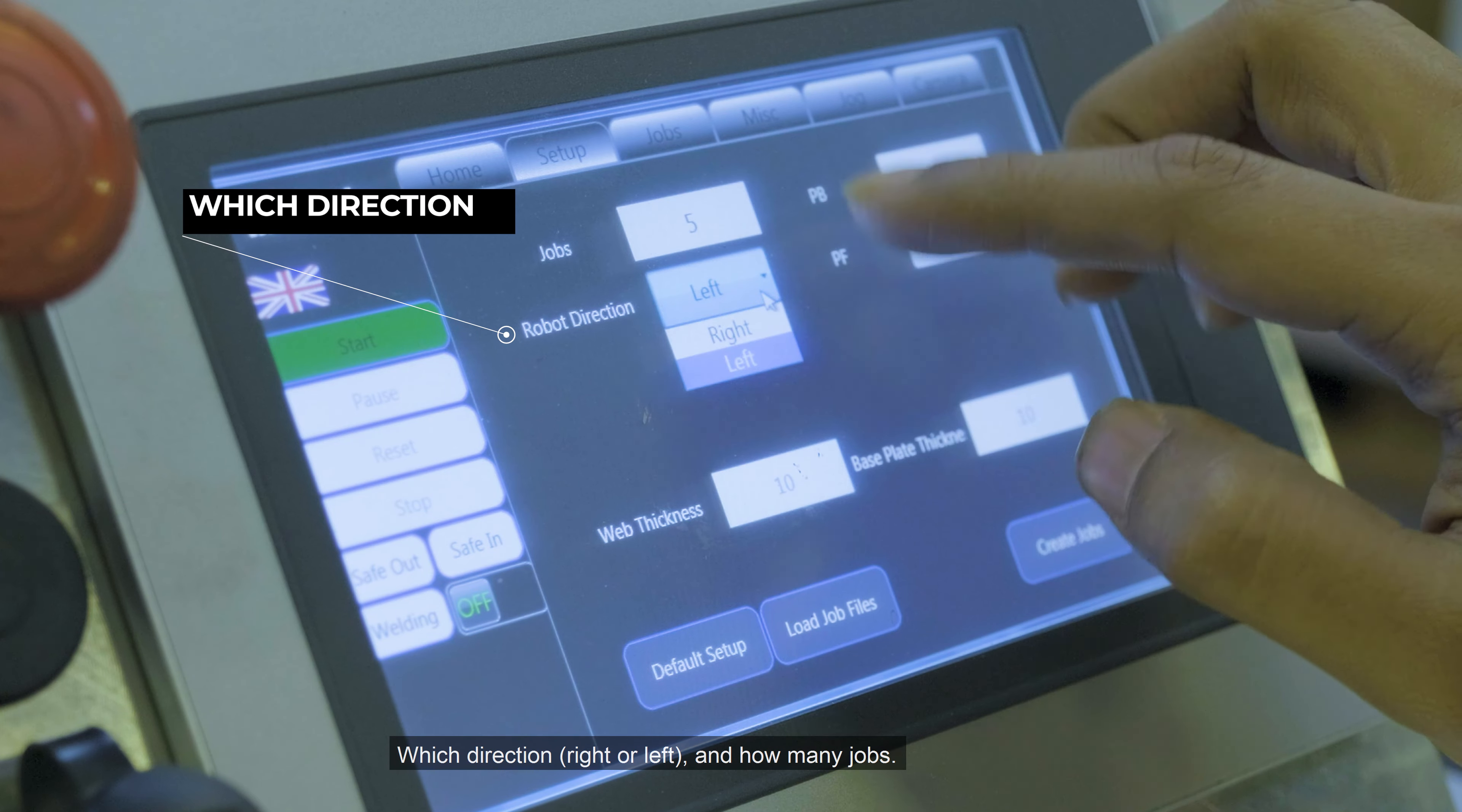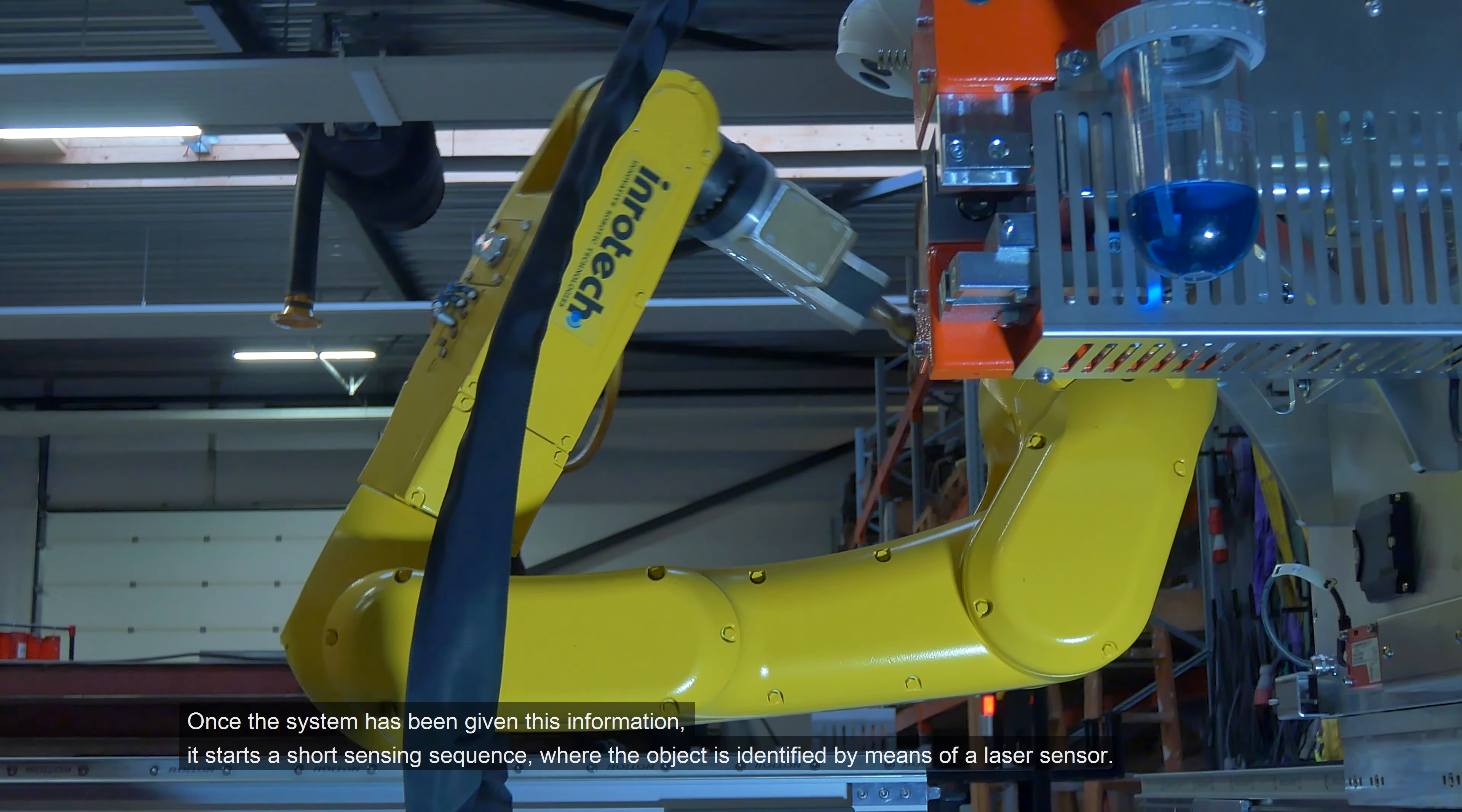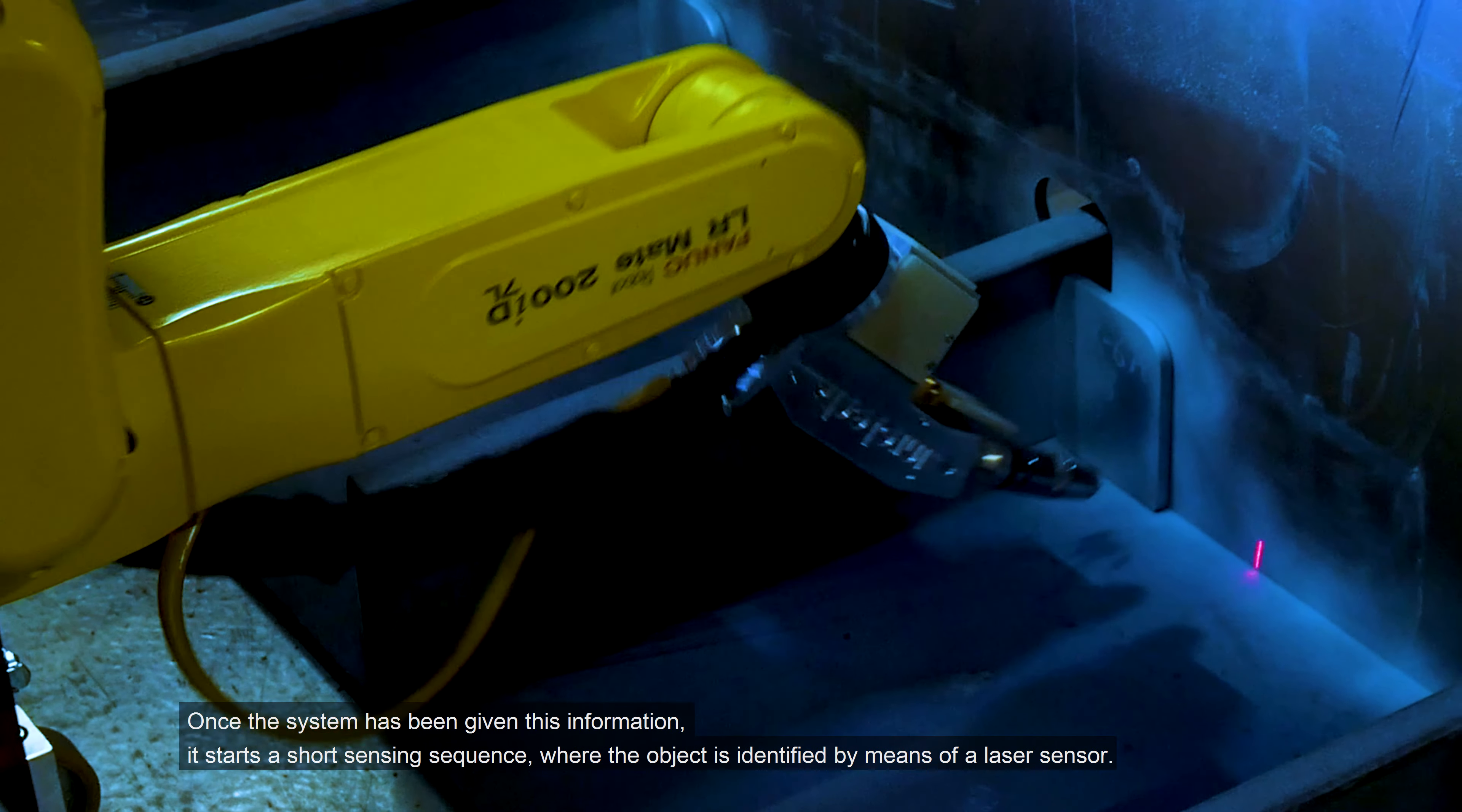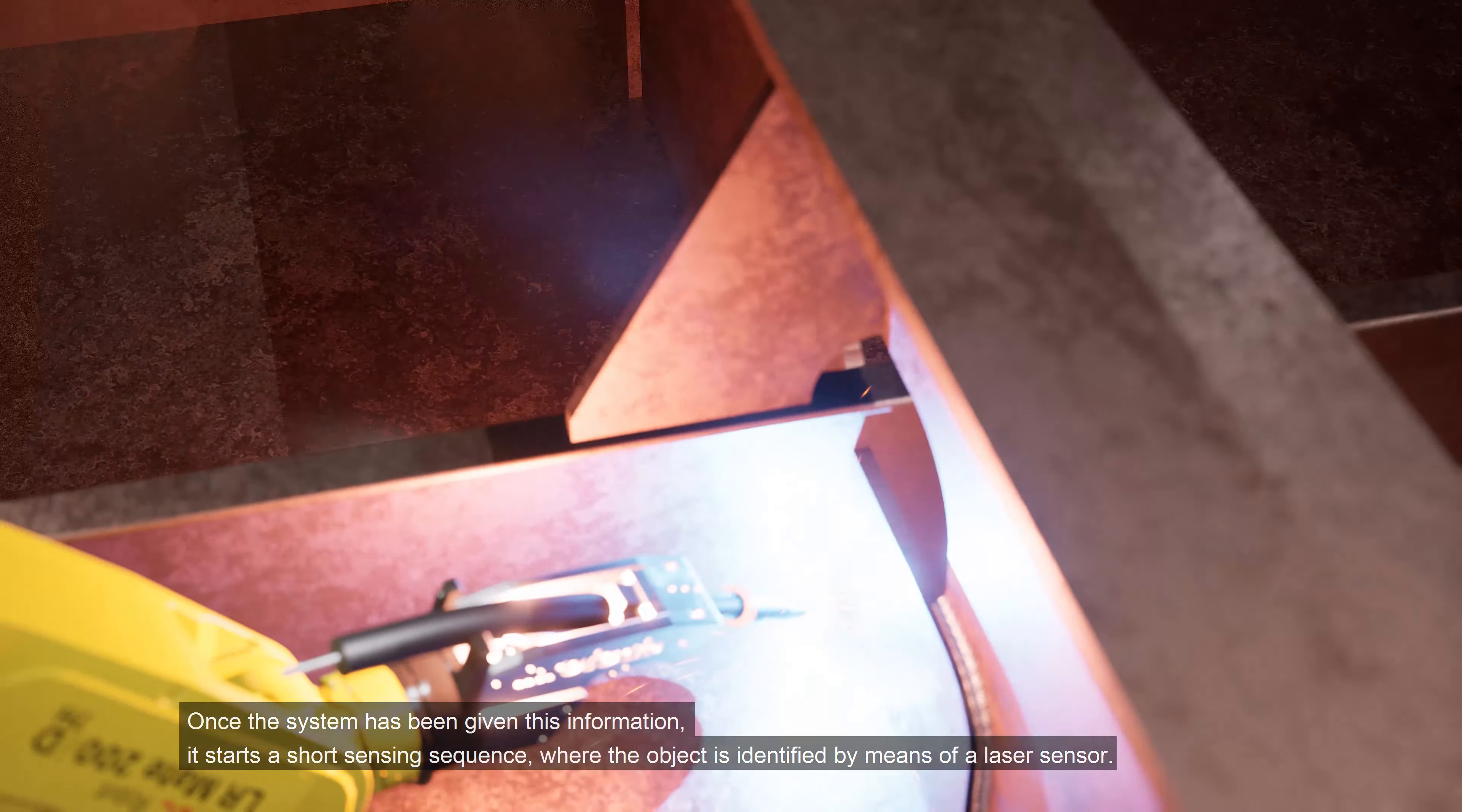Which direction, right or left, and how many jobs. Once the system has given this information, it starts a short sensing sequence where the object is identified by means of a laser sensor.